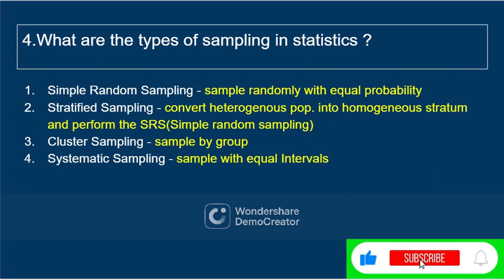What are the types of sampling in statistics? There are four important types. First is simple random sampling, where we take samples randomly with equal chance or equal probability — there is no human bias. Next is stratified sampling, where we convert a heterogeneous group into homogeneous strata and then perform simple random sampling. Third is cluster sampling, where we sample by group. Fourth is systematic sampling, where we sample at equal intervals — like 0 to 10, 10 to 20, etc.